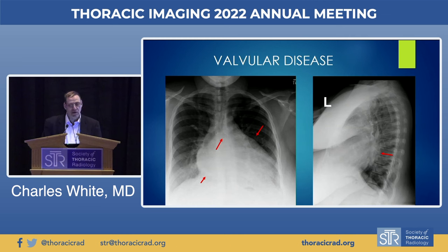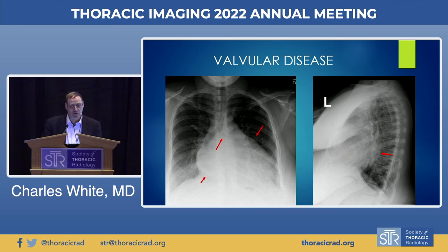Enlargement of the left atrium is also shown here, with enlargement of the left atrial appendage. On the lateral view posteriorly, the left atrium is also enlarged. This is left atrial enlargement, a finding invariably associated with mitral valvular disease.